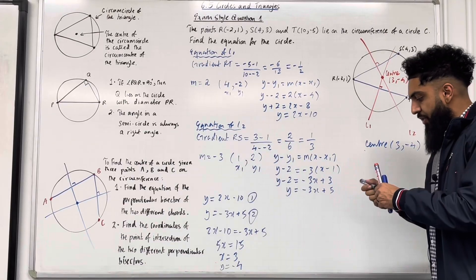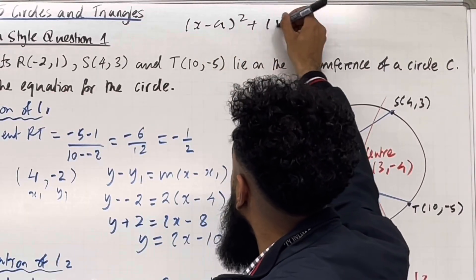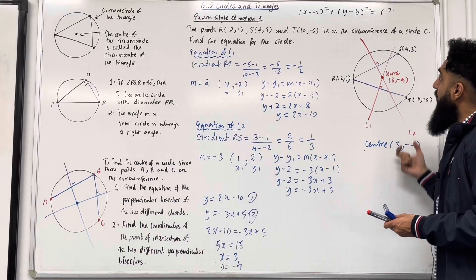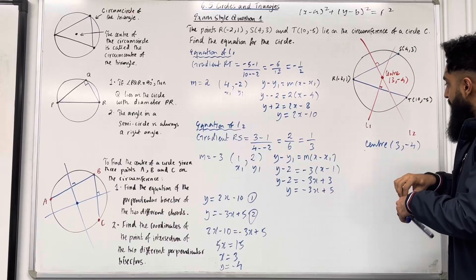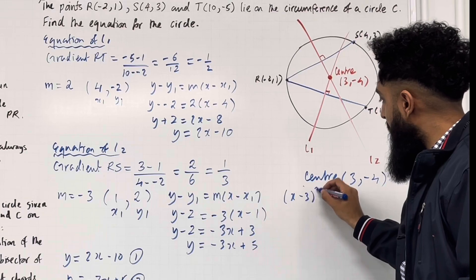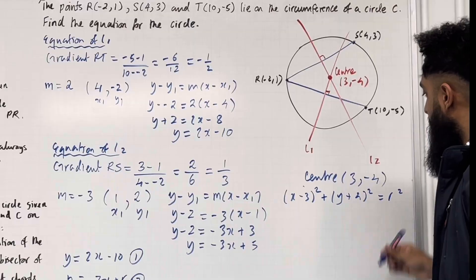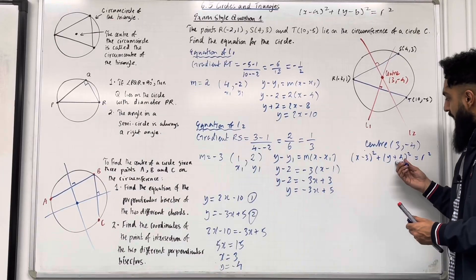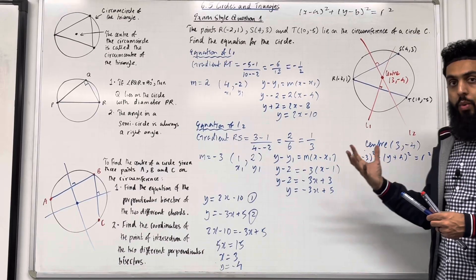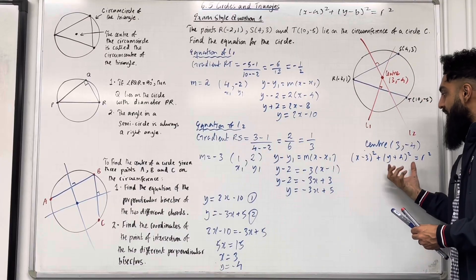We know that the general equation of a circle with centre (a, b) and radius r is (x − a)² + (y − b)² = r². Substituting the centre (3, −4) into the general equation gives: (x − 3)² + (y + 4)² = r². Since the y-coordinate is −4, we put +4 here. To find the radius, we now take either the coordinate for R, S or T and substitute it into this equation.